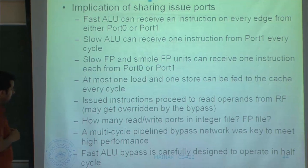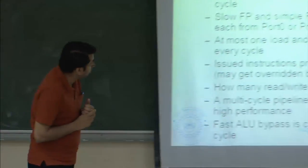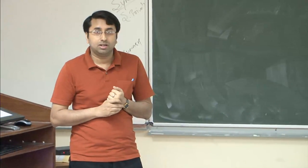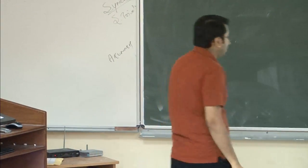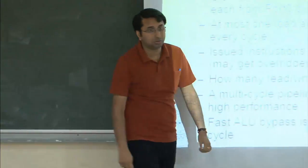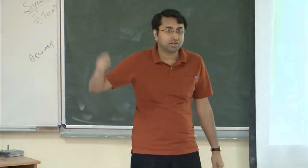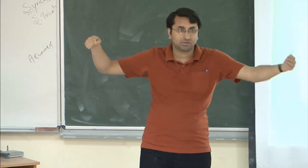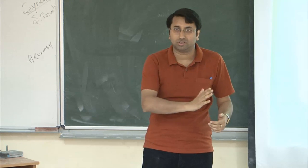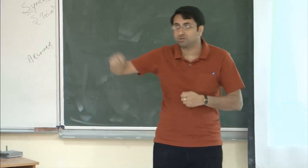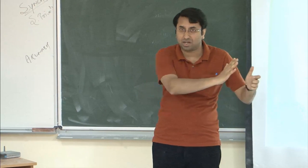Issued instructions proceed to read operands from the register file, which may be overwritten by bypass. Pentium 4 had a multi-cycle pipeline bypass network. Although bypass networks are designed, at high frequency you cannot necessarily bypass values from one stage to another in a single cycle — wires take time to communicate and this may not happen in one cycle. So you have to pipeline the bypass path itself, putting latches in between to segment the wire.